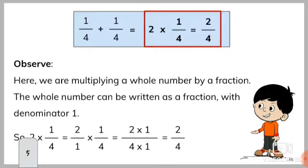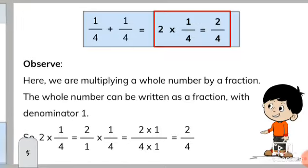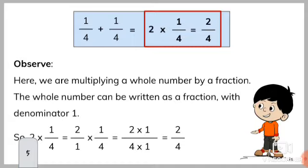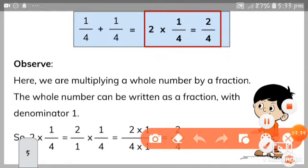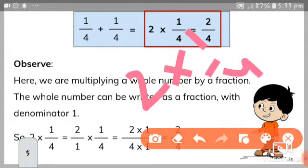So here we can multiply a whole number by a fraction. The whole number can be written as a fraction with the denominator one. So two into one by four — the whole number two can be written with denominator one. Two into one by four equals two by four.